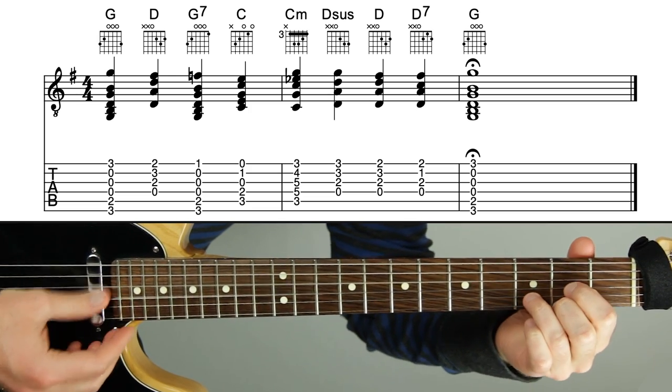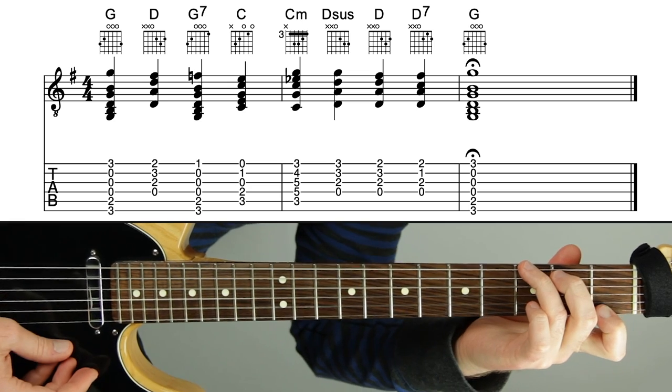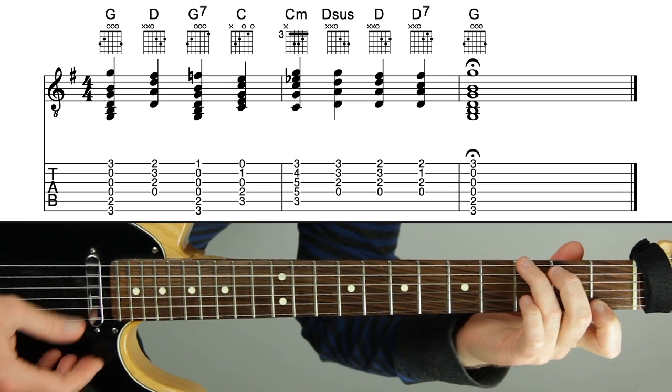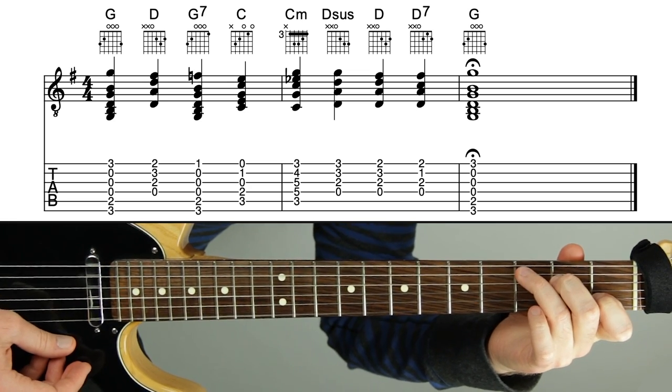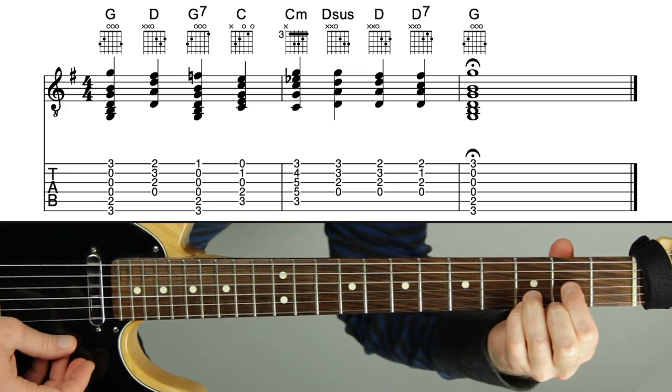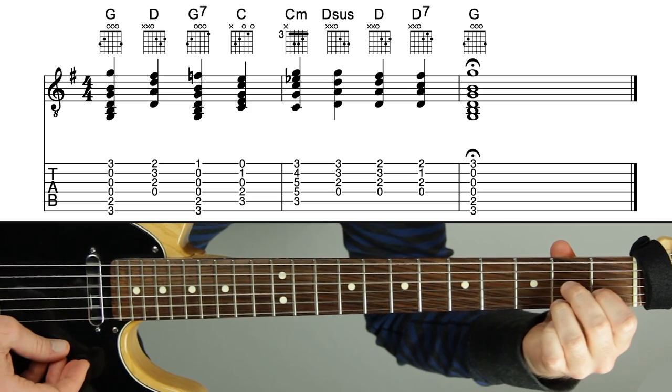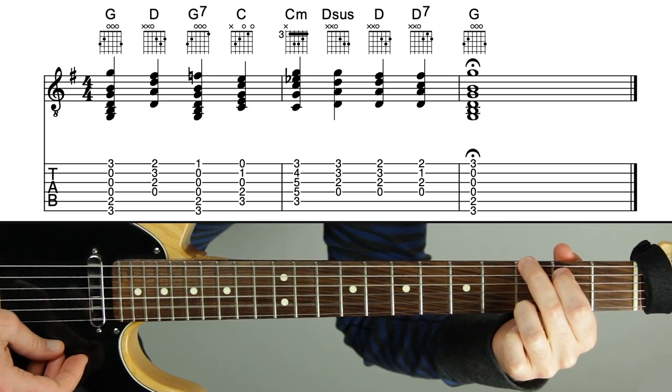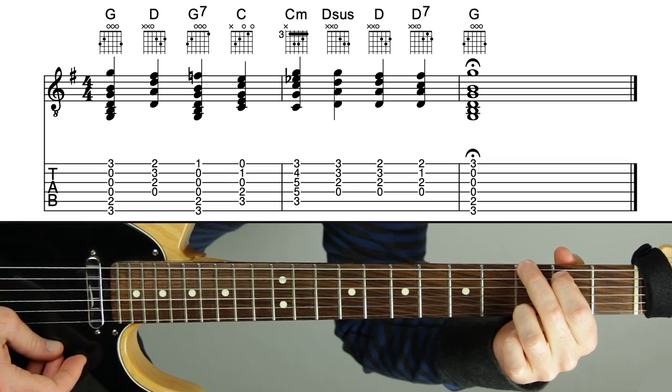So here's the progression I was playing in the key of G with what we think of as the most obvious chords, mostly open string chords. We have G, we have D, which is the V chord. We have G7 going to C, which is the IV chord. We have C minor, then D sus4, D, and then D7, and back to G. Here it is in time.